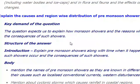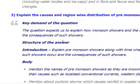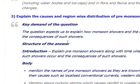The next question is: explain the causes of and region-wise distribution of pre-monsoon showers in 20 to 50 words. So we have to discuss the causes of the region-wise distribution of pre-monsoon showers.